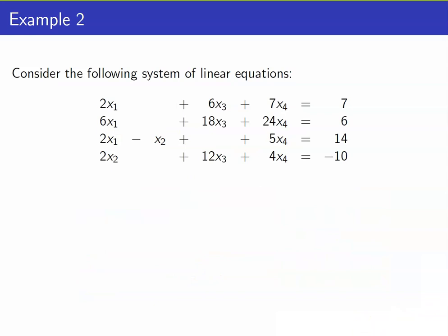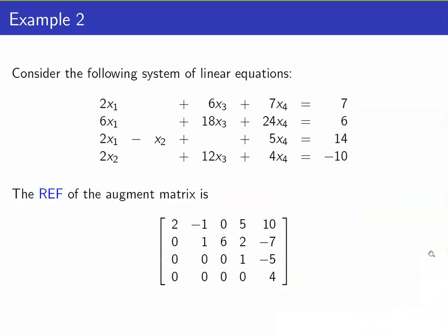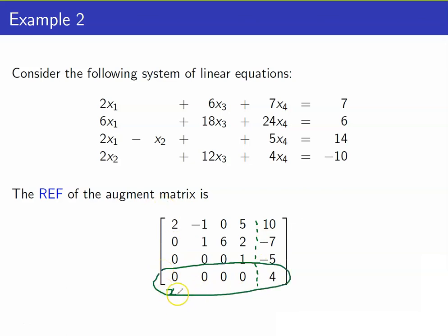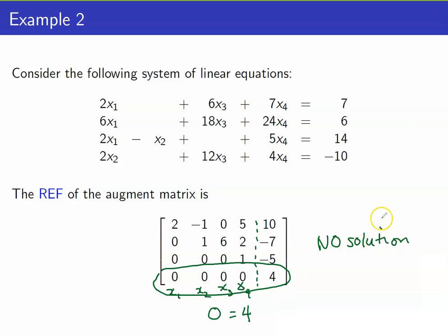Let us consider the next example. If we get the RREF of the augmented matrix, we obtain a matrix where the last row indicates 0x₁ plus 0x₂ plus 0x₃ plus 0x₄ is equal to 4 — that is, 0 equals 4. And that is impossible. Hence, this system has no solution.